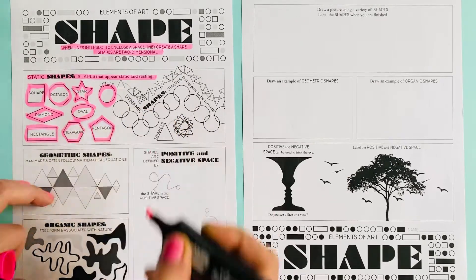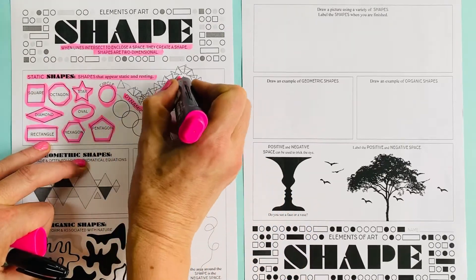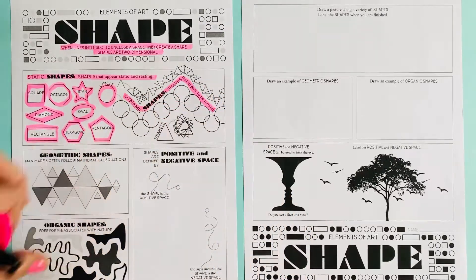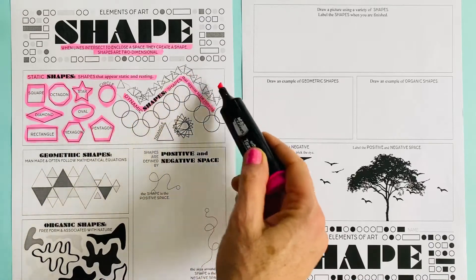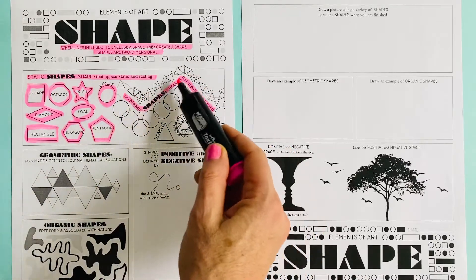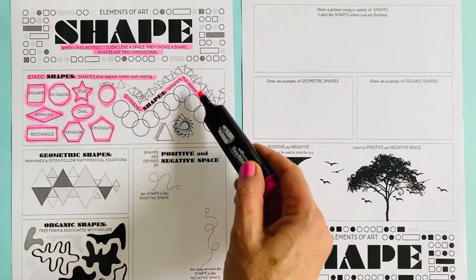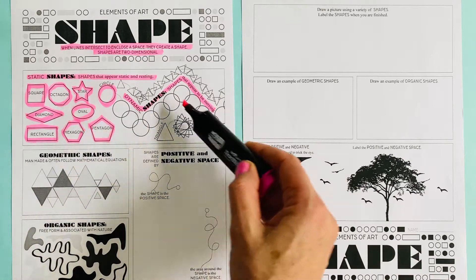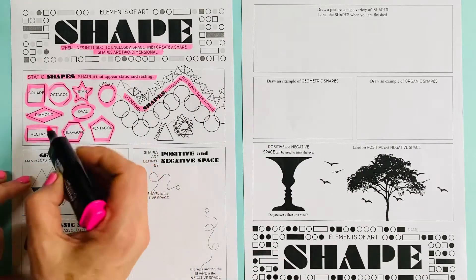Dynamic shapes are shapes that appear to be moving, and this dynamic effect has been created by intersecting the shapes. Have a look at how these circles look as though they're jumping — very useful in doing a diagram.